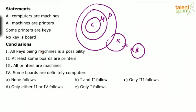First conclusion: all keys being machines is a possibility. If you look at the first three statements, all are positive — all computers are machines, all machines are printers, some printers are keys. The last one is negative: no key is a board. But the first conclusion talks about keys and machines, both of which are under the first three statements. So all keys being machines is a possibility — yes, it is possible. You can see that the first one follows.